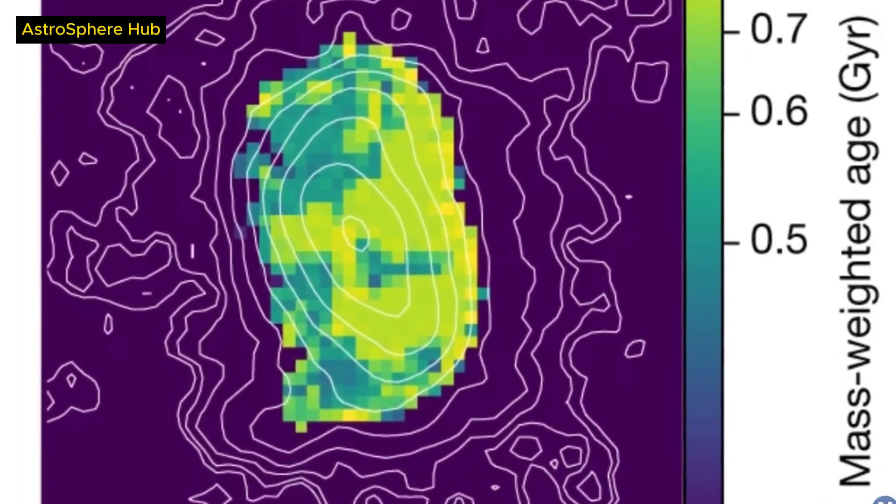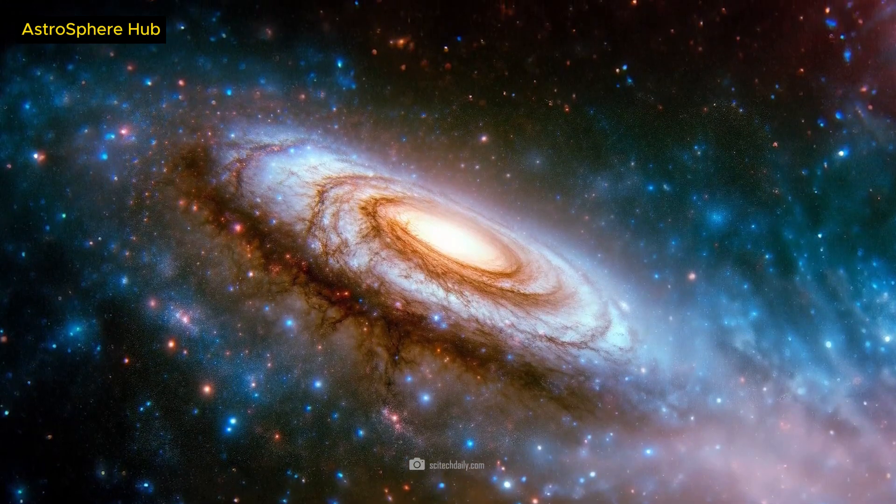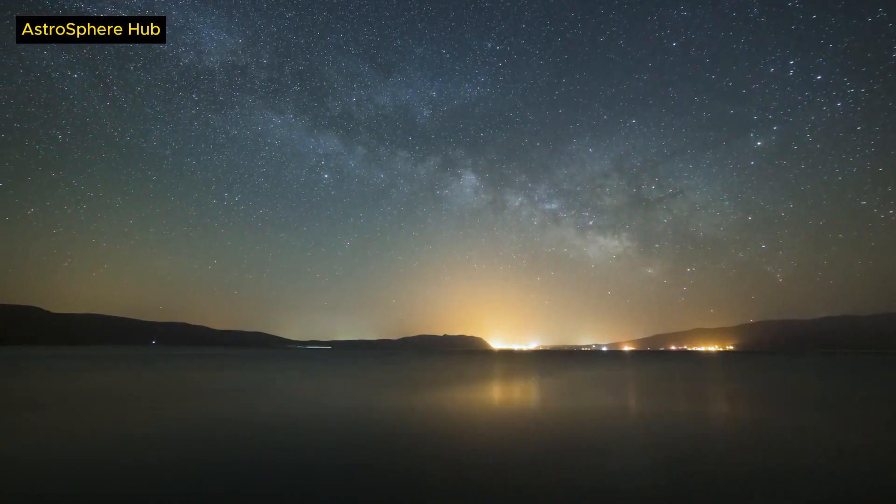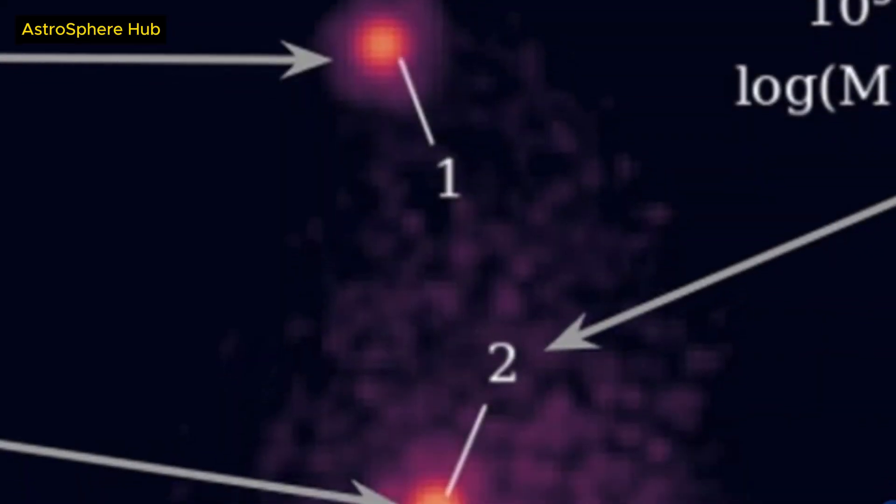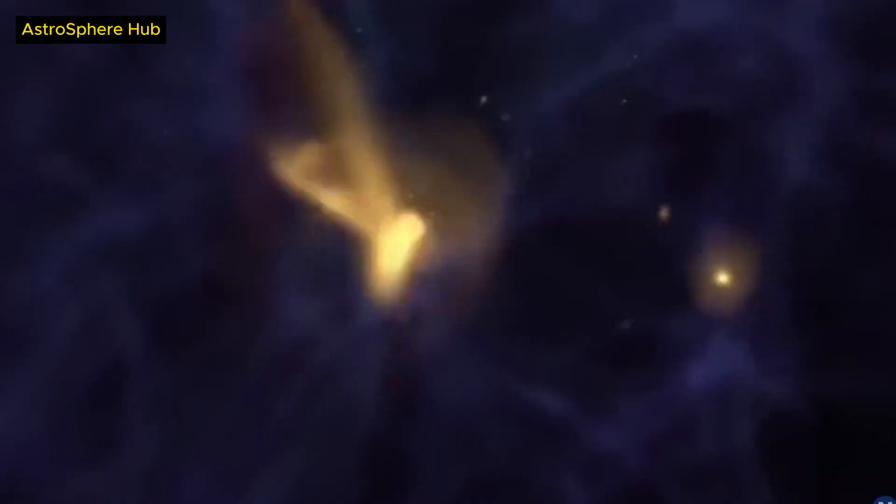This indicates that the central star cluster is very primitive, and that it formed from gas that was not enriched by previous generations of stars. This also means that the central star cluster is very similar to the first stars that formed in the universe, which are called population 3 stars.